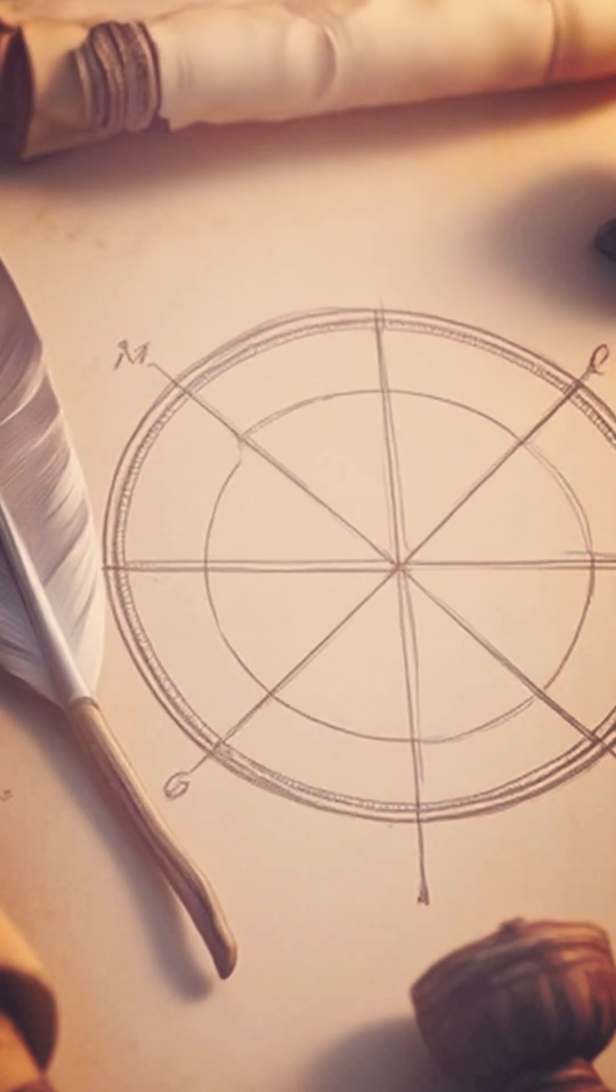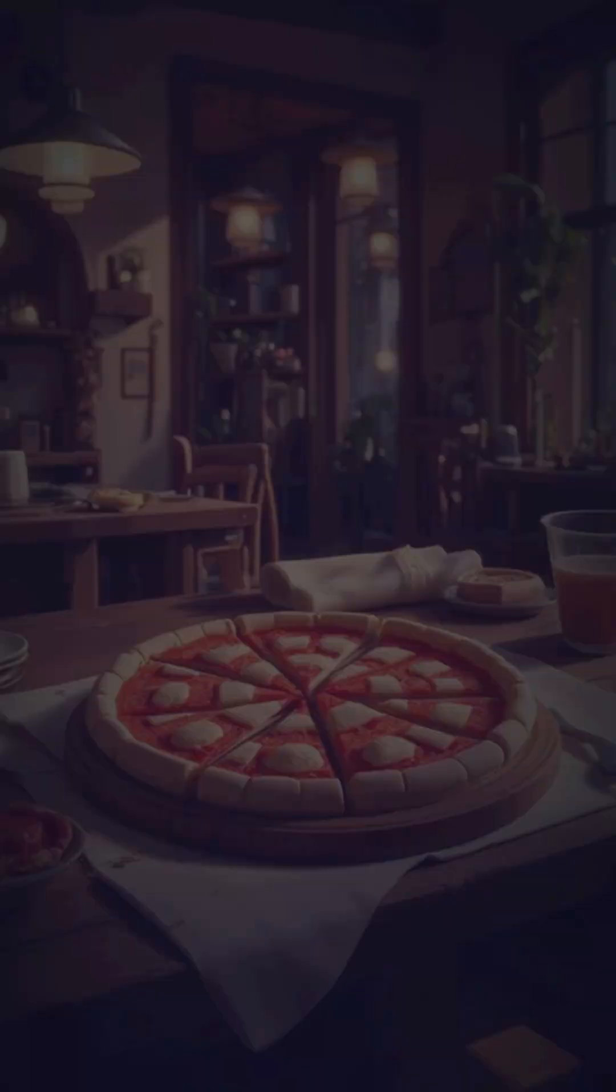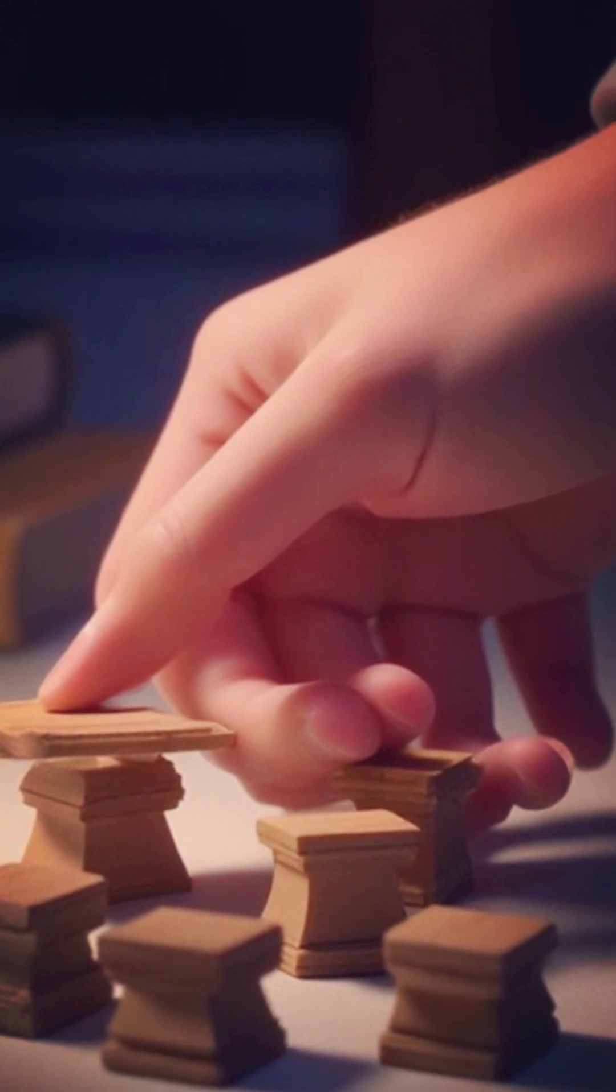He imagined slicing the circle into many thin wedges like pieces of a pizza, and then rearranging them alternately, one up, one down.